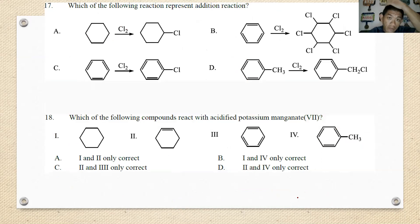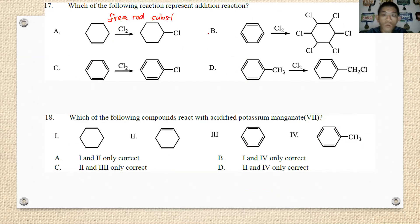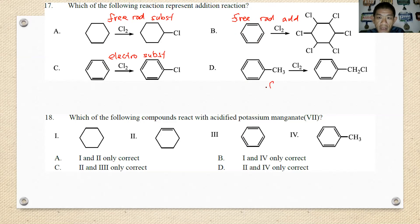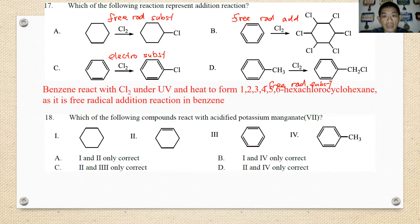Number seventeen: which of the following represents an addition reaction? The first is a free radical substitution. The second is a free radical addition reaction. Benzene reacting with chlorine is an electrophilic aromatic substitution. The last is free radical substitution also. So the best answer is B — the free radical addition.